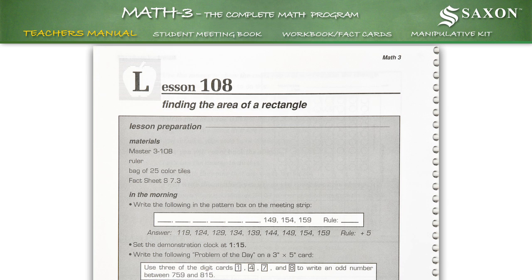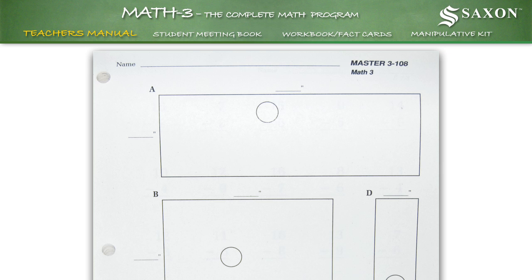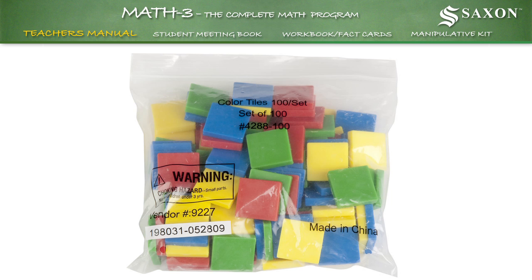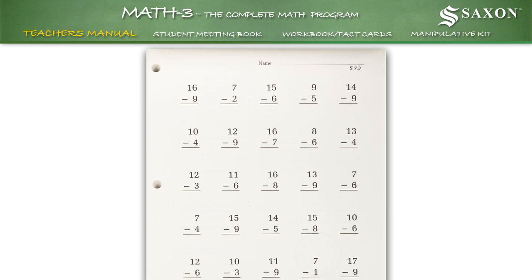For instance, in Lesson 108, under Lesson Preparation, the suggested materials needed to teach the concepts are the Master 3108, a ruler found in the manipulative kit, a bag of 25 color tiles also found in the manipulative kit, and the fact sheet S7.3 found in the facts package.